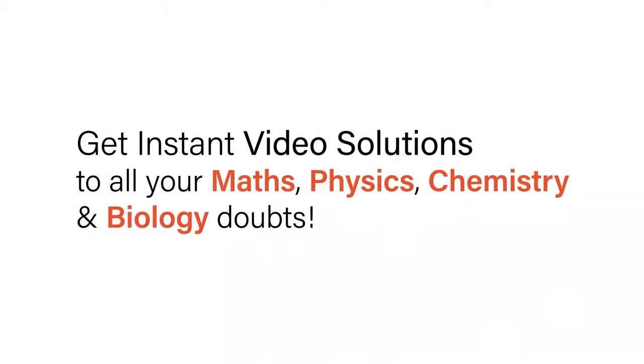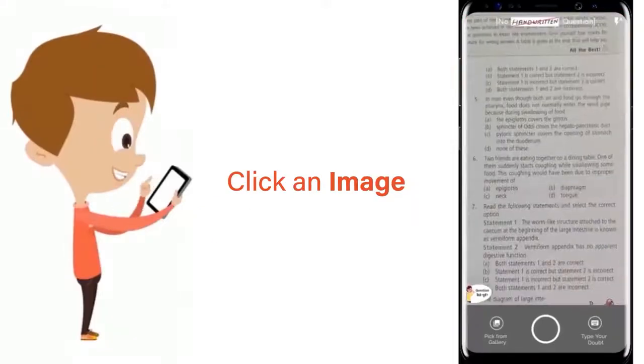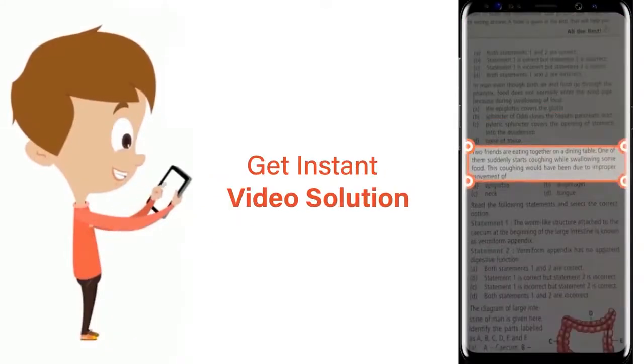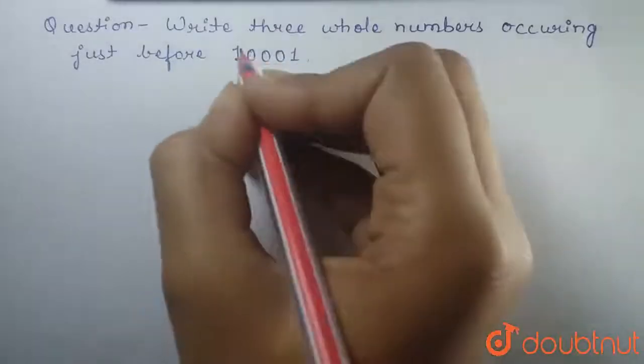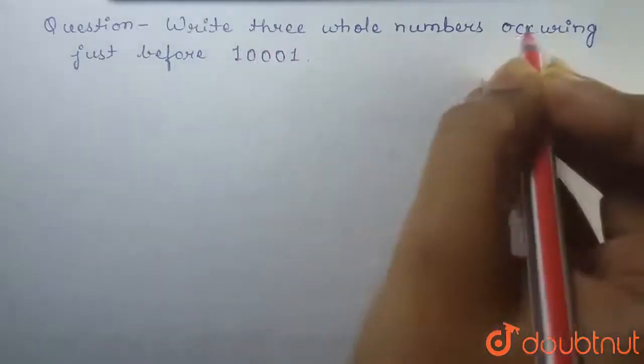With Doubtnut, get instant video solutions to all your maths, physics, chemistry, and biology doubts. Just click the image of the question, crop it, and get an instant video solution. Download Doubtnut app today. Question: Write three whole numbers occurring just before 10001.